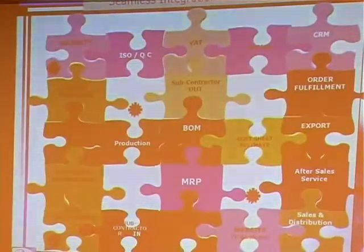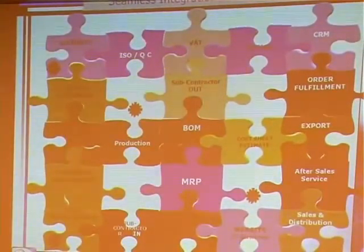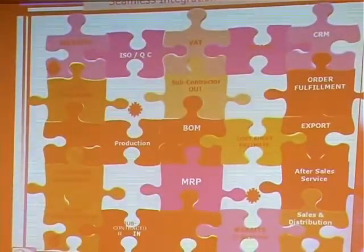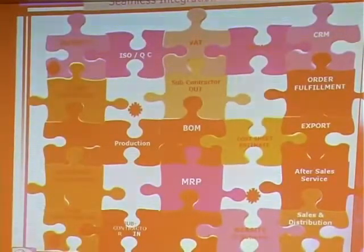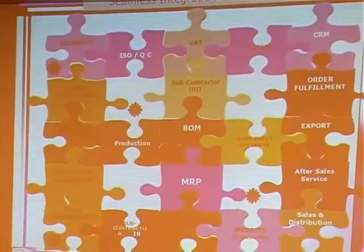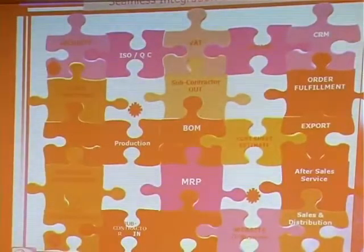We put this in a jigsaw puzzle very intentionally. At the center of everything is the BOM — that's the Bill of Material. That's the pivot of the ERP. Everything evolves around that.